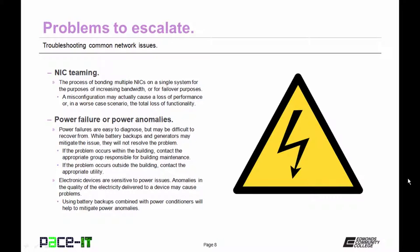If the problem occurs outside the building, contact the appropriate utility. Electronic devices are sensitive to power issues. Anomalies in the quality of the electricity delivered to the device may cause problems. Using battery backups or uninterruptible power supplies with power conditioners will help to mitigate power anomalies.